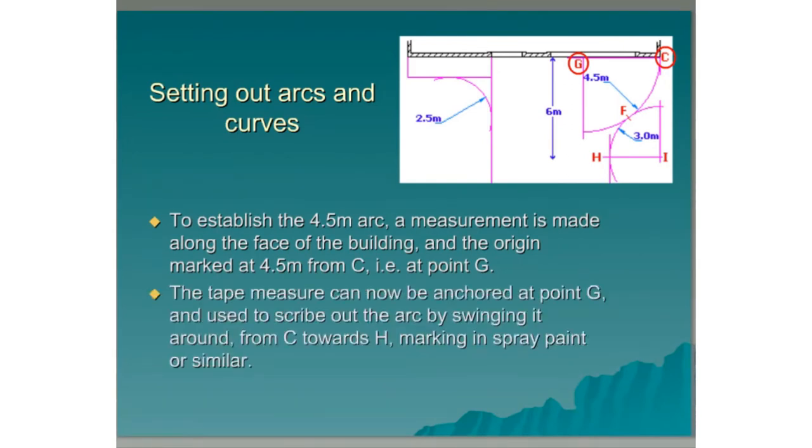The tape measure can now be anchored at point G and used to scribe out the arc by swinging it around from point C towards H, marking in spray paint or similar.